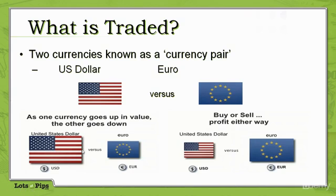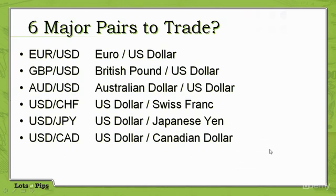That's the fluctuation that we're going to trade. We're going to anticipate which one's going to increase and which one's going to decrease. As the US dollar drops, then the Euro will increase. We have six major pairs to trade. The Euro-US is one. There are hundreds of pairs — you can cross-connect any pair out there. These are the main ones that control most of the markets in the world.